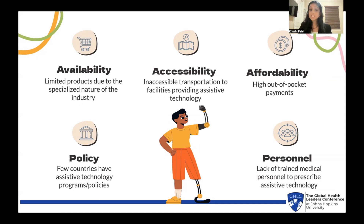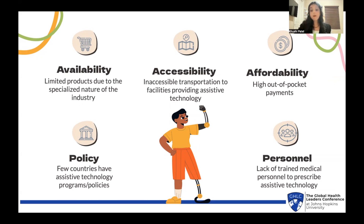Next is the issue of policy. Very few countries have assistive tech programs and policies set in place, and often, even when they are set in place, they aren't satisfactory because they tend not to offer the necessary amount of goods and services. For example, in many European countries, the state provides older people with only one hearing aid, despite the fact that most people with age-related hearing loss require two hearing aids to properly function.